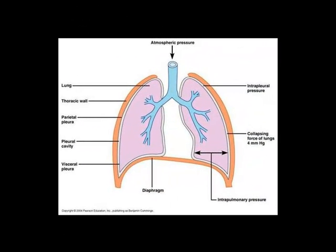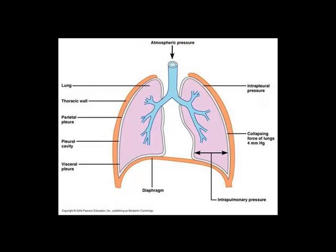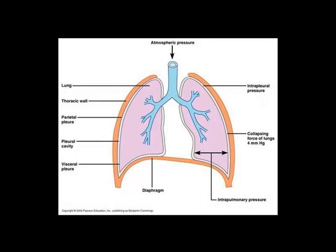The three pressures when talking about the lungs are atmospheric pressure, intrapulmonary pressure, and intrapleural pressure. Atmospheric pressure is all the air in the atmosphere that pushes down on us. If you go to a higher elevation where there's less pressure, you'll feel the difference. There is pressure exerted on our chest cavity, on our mouth and airways, just from the atmosphere. Intrapulmonary pressure is the positive pressure inside the lungs pushing out on all sides. Atmospheric pressure and intrapulmonary pressure are both positive pressures.